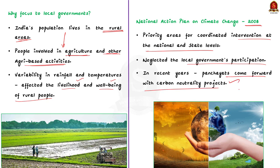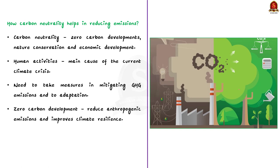Let us briefly see how carbon neutrality helps in reducing emissions. Carbon neutrality advocates for zero carbon developments, nature conservation, sufficiency of food, energy and seeds, and economic development. Human activities are the main cause of the current climate crisis, so we as humans need to take measures to mitigate greenhouse gas emissions. Zero carbon development promotes sustainable living and is an effective solution to reduce anthropogenic emissions and improve climate resilience.